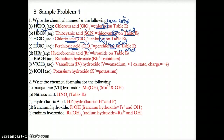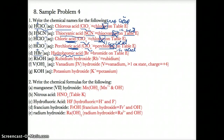HBr has only two elements, so all you need to do is hydro- plus blank plus -IC acid, where the blank is for the ion after H+. Since Br- is the ion after H+, you name it hydrobromic acid.